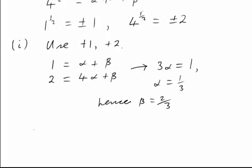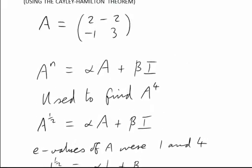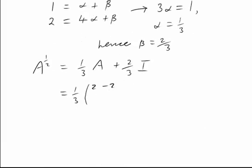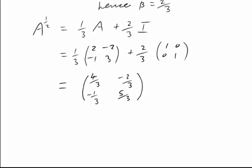So here is my first claim for square root of A. A to the half should be 1 third A plus 2 thirds I. Let's work that out explicitly. That's 1 third times the matrix 2, negative 2, negative 1, 3, plus 2 thirds times 1, 0, 0, 1. In the first position we have 2 times a third plus another 2 times a third, that's 4 thirds. Then negative 2 thirds, negative 1 third. And in the last position 3 times a third is 1 plus a further 2 thirds, that's 5 thirds.